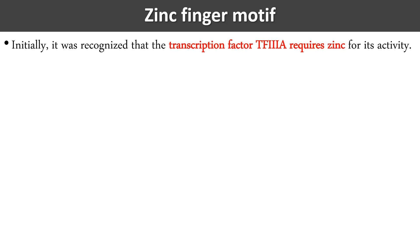Initially it was recognized that transcription factor 3A requires zinc for its activity. But later it was found that it is not only zinc — it can also bind with iron, and sometimes there are no metal ions at all. Zinc is not a compulsion; it is called zinc finger simply because it was first discovered with zinc.